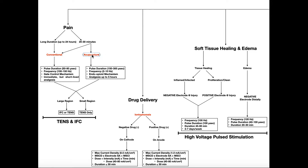Choosing between conventional and acupuncture settings really depends on how long you want the pain reduction or analgesia to persist after the treatment. The acupuncture setting on TENS and IFC will allow analgesia up to five hours after the treatment is complete. So if you want somebody to be able to walk out of the clinic and have analgesia for at least a couple hours after they complete that treatment, then the acupuncture treatment is going to be the best option, assuming they can tolerate it. For that, the pulse duration is set between 150 and 300 microseconds, and the frequency is set between 2 and 10 hertz.